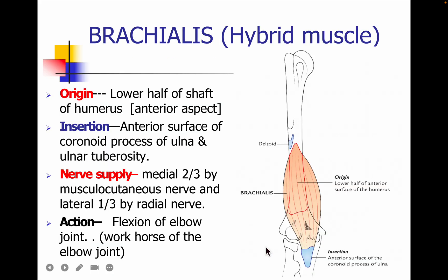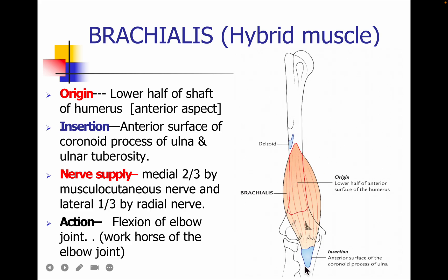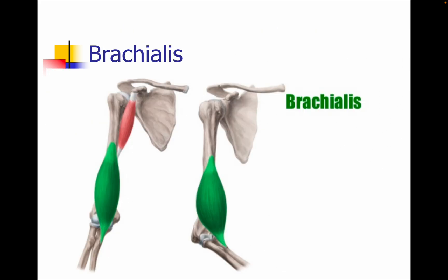The third muscle is the brachialis, also known as a hybrid or composite muscle — any muscle having two different nerve supplies. The origin is from the lower half of the anterior aspect of the shaft of the humerus. The insertion is into the coronoid process of the ulna and the ulna tuberosity. This muscle has dual nerve supply: the musculocutaneous nerve supplies the medial two-thirds, and the radial nerve supplies the lateral one-third. The action is flexion of the elbow joint. Brachialis is also called the workhorse of the elbow joint.